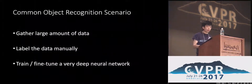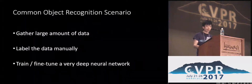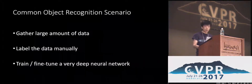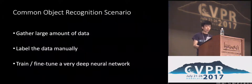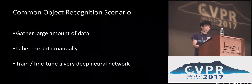Nowadays, the common object recognition scenario is as follows. First, gather a large amount of data — hundreds or thousands of examples for each class. Then, label the data manually. Finally, feed all of the available labeled data into a very deep neural network to fine-tune the ConvNet, or to train the ConvNet from scratch.